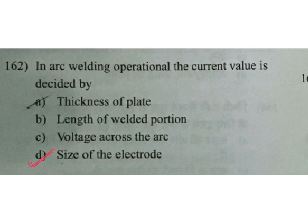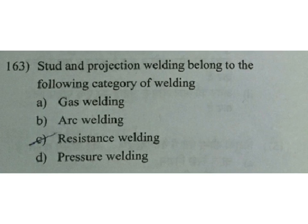Stud and projection welding belong to the following category of welding: A gas welding, B arc welding, C resistance welding, D pressure welding. Stud and projection welding are examples of resistance welding — C is the answer.